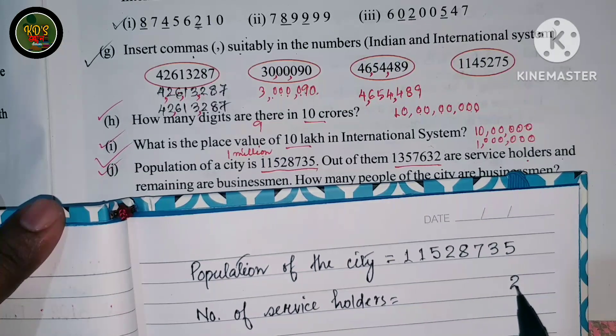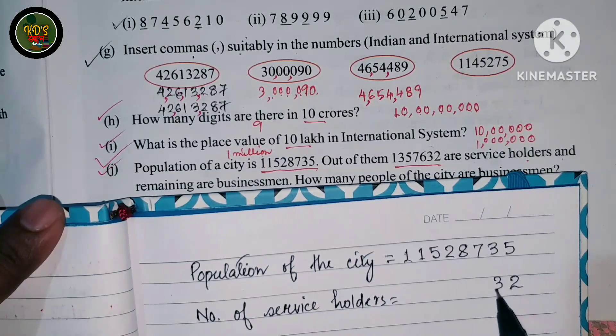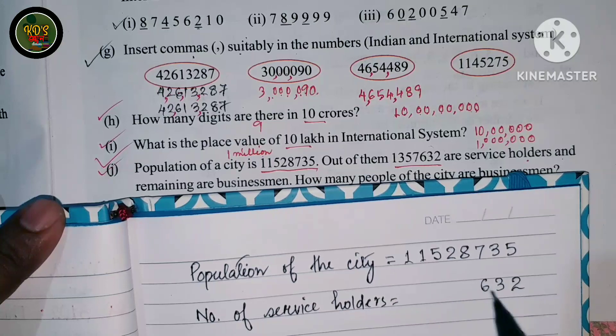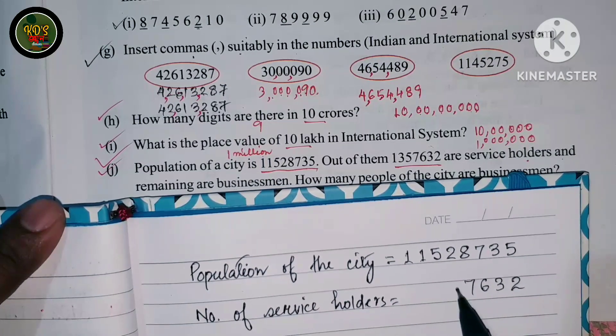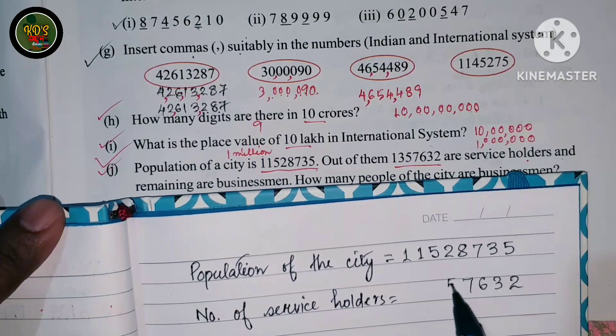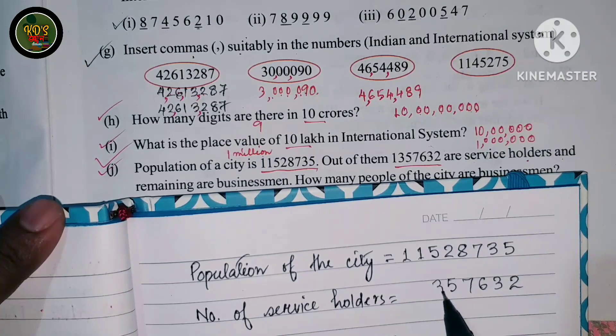Counting the digits: 1, 2, 3, 6, 7, 5, 3, 1.